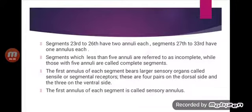The first annulus of each segment bears larger sensory organs called sensillae or segmental receptors. There are four pairs on the dorsal side and three on the ventral side. The first annulus of each segment is therefore called the sensory annulus.